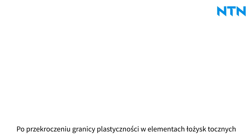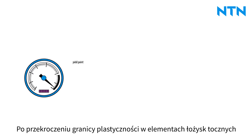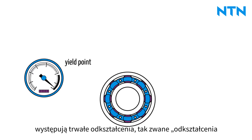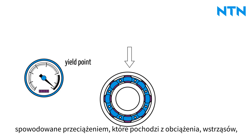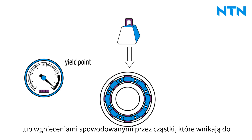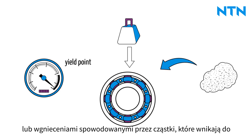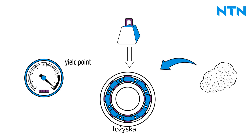When the yield point is exceeded, permanent deformations — so-called plastic deformations — occur in rolling bearing components. Exceeding the yield point can be caused by overload from load or shocks, or by indentations caused by particles that penetrate the bearing and are then rolled over.